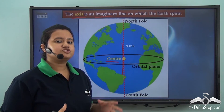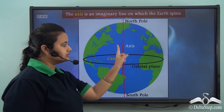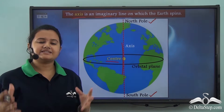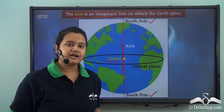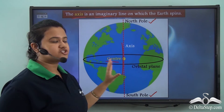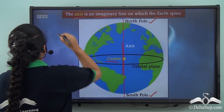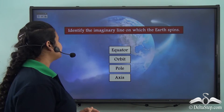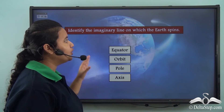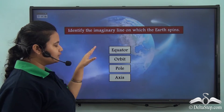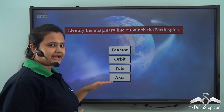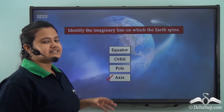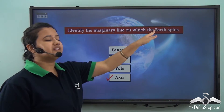This imaginary line is known as the axis. The axis is an imaginary line that passes through the Earth's centre and connects the North Pole and South Pole. Now, can you identify the imaginary line on which the Earth spins? Is it the equator, orbit, pole, or the axis? The correct answer is axis — axis is the imaginary line on which the Earth spins.